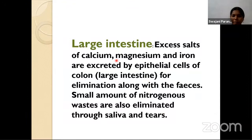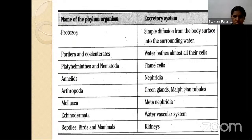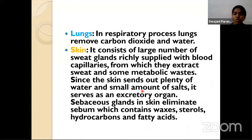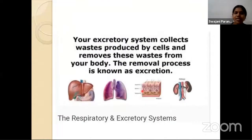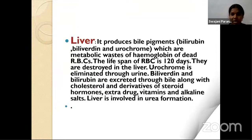Large intestine: Excess salts of calcium, magnesium, and iron are excreted by epithelial cells of the colon, eliminated along with fecal matter. Some nitrogenous waste is also eliminated through saliva and tears. The main excretory organ is the kidney; followed by lungs, skin, liver, and large intestine, all playing a major role in excretion.